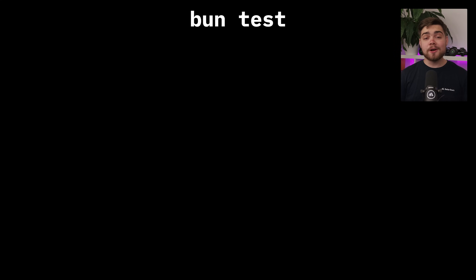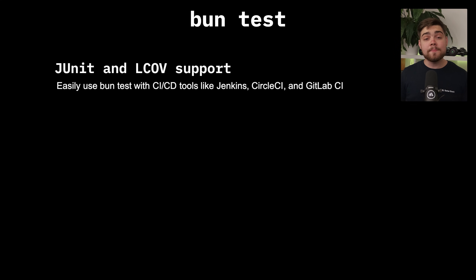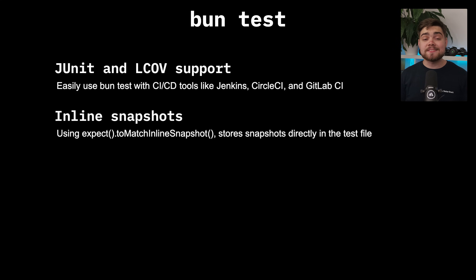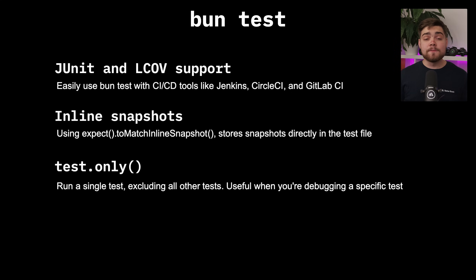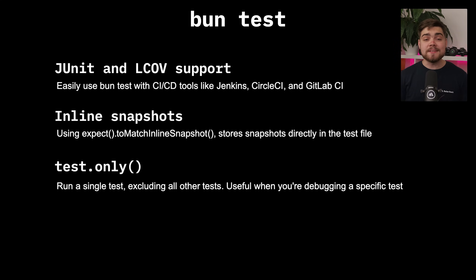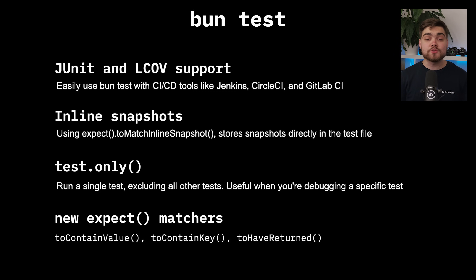BUN test got major upgrades as well. It now supports JUnit and LCOV reporting for better CI/CD integration with tools like Jenkins and GitLab. They've added inline snapshots so you can see test expectations right in your code, and a test.only function for focused debugging. The Expect API has been expanded with new matchers like containValue and haveReturned, and error handling for uncaught exceptions between tests has also been improved.